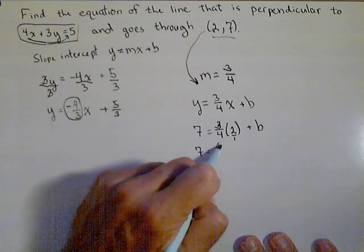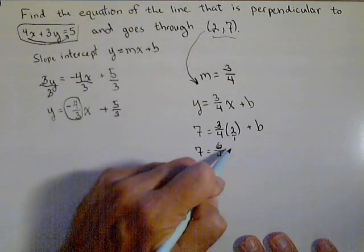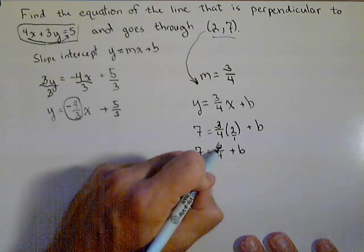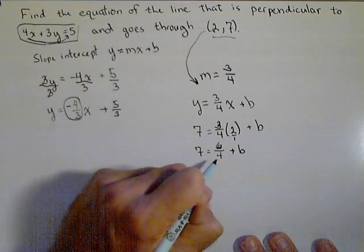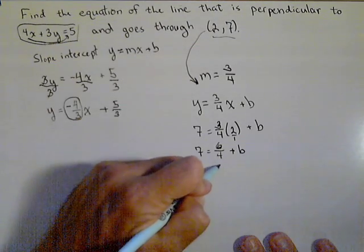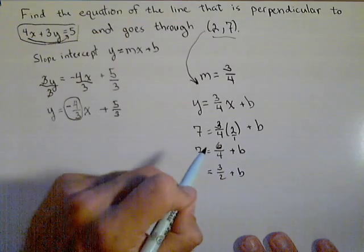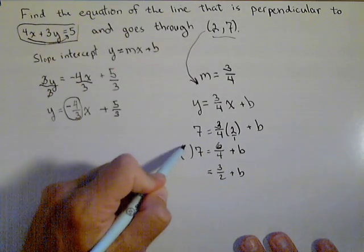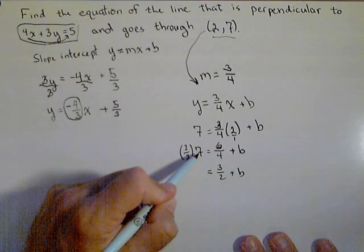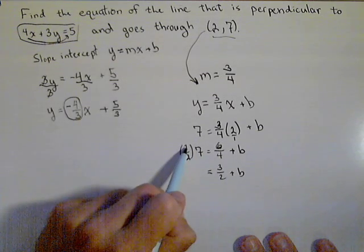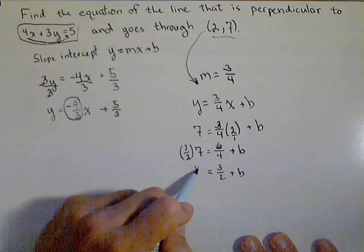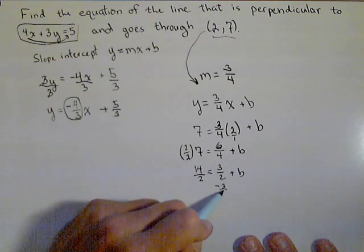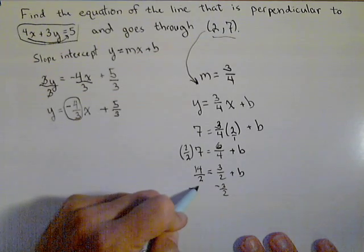And 4 times 1, which is 4, plus b. We can also reduce that to make this a little bit smaller fraction. So that's 3 halves plus b. It might be easier to convert the 7 to b in terms of halves as well. So multiply by 2 over 2. So that's going to give us 7 times 2 is 14, over 2. So now we can subtract 3 halves from both sides.